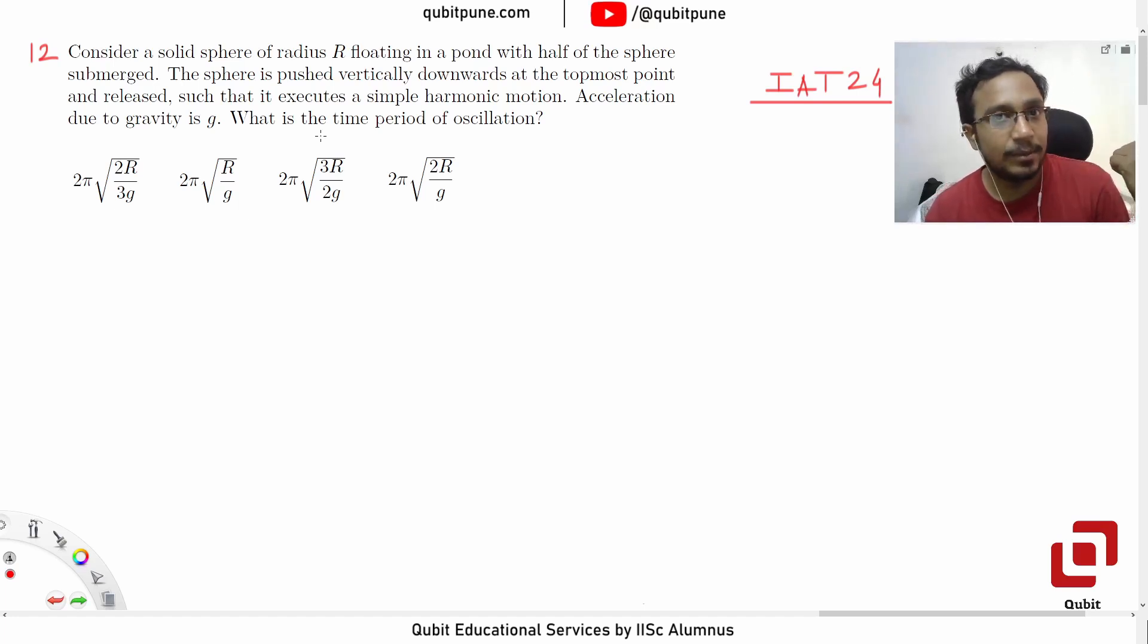In the very first problem we solved today, we had that disc rolling without slipping with two springs. There we prefer the energy approach because that is more easy, simpler, or less time. So I need to take the decision which approach to use: free body diagram and differential equation for natural frequency, or total energy. At the end you will have that differential equation.